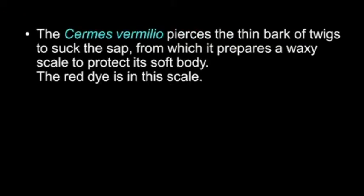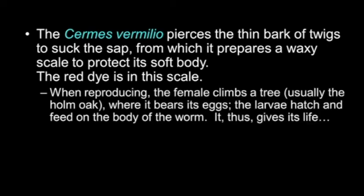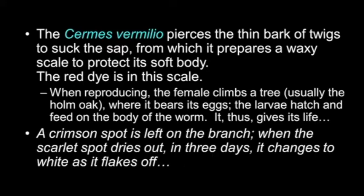This Cermis vermilio pierces the thin bark of twigs to suck the sap, from which it prepares a waxy scale to protect its soft body. The red dye is in this scale. When reproducing, the female climbs a tree — usually the home oak — where it bears its eggs. The larvae hatch and feed on the body of the worm. In other words, it gives its life for the young. A crimson spot is left on the branch. When the scarlet spot dries out — in three days — it changes to white as it flakes off. What a provocative idiom we have here.